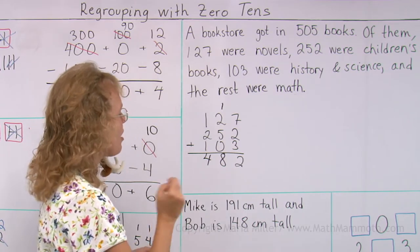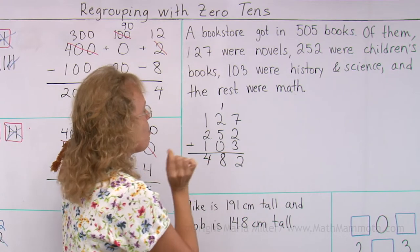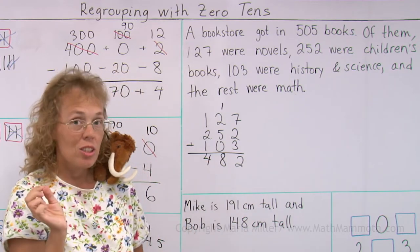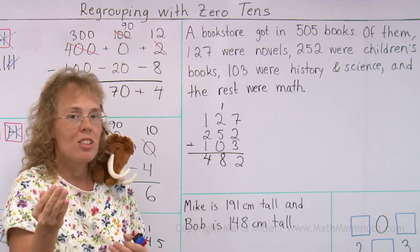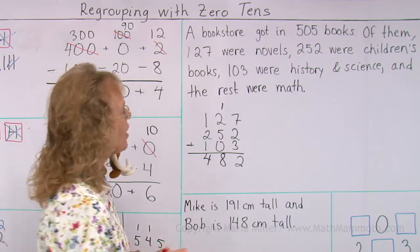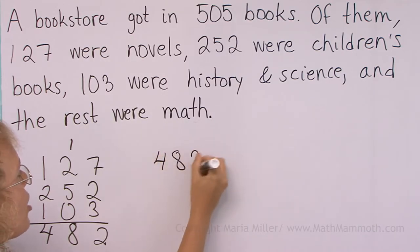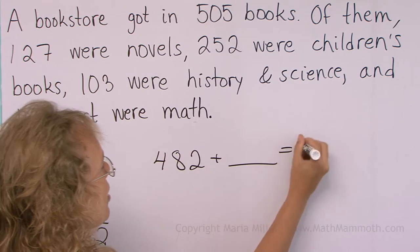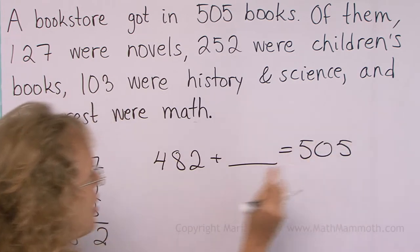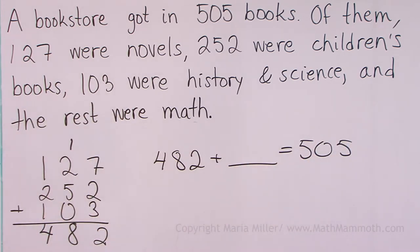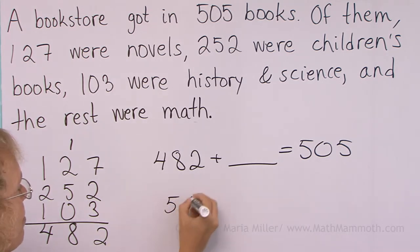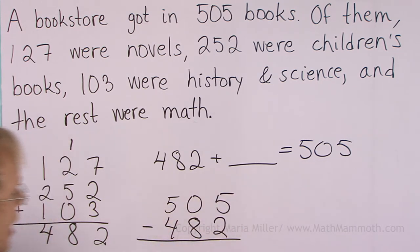So now we need to figure out how many math books there are, and I can use addition. I can make a how many more addition, or I can use subtraction. For example, the how many more addition goes like this. And here would go the number of math books. But I can also subtract those two numbers to find it. Let me try that.